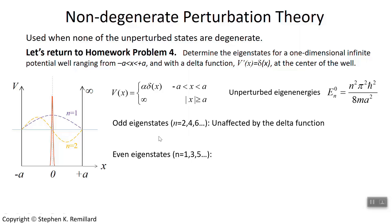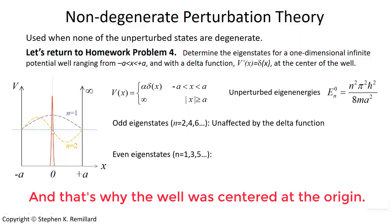When you did problem 4, you quickly concluded that the odd eigenstates are not affected by the delta function in the center because they have no amplitude in the center. But the even eigenstates have a maximum value at x equals 0 — all of them do, n equals 1, 3, 5, 7 — they all have a max value, negative or positive, at x equals 0. So they are affected by the delta function, but the odd eigenstates have no amplitude where the delta function is, so they don't respond to it at all.